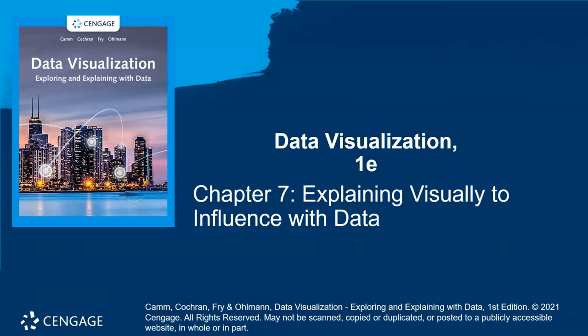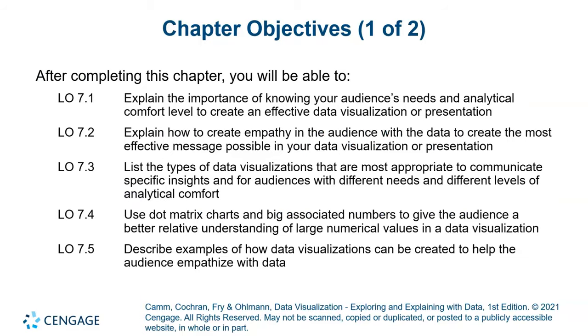Dear students, today we will discuss chapter number seven, which is related to explaining visually to influence with data. We will see how we can explain visually to influence with data with respect to pictures and different terminologies like ethos, logos, pathos, and the pyramid structure.